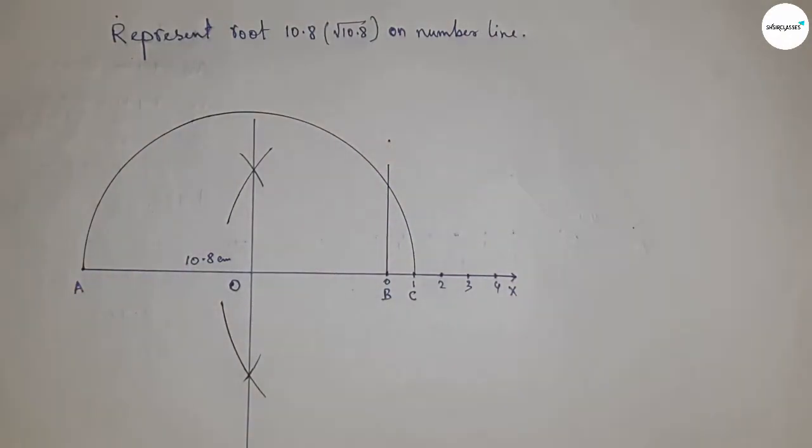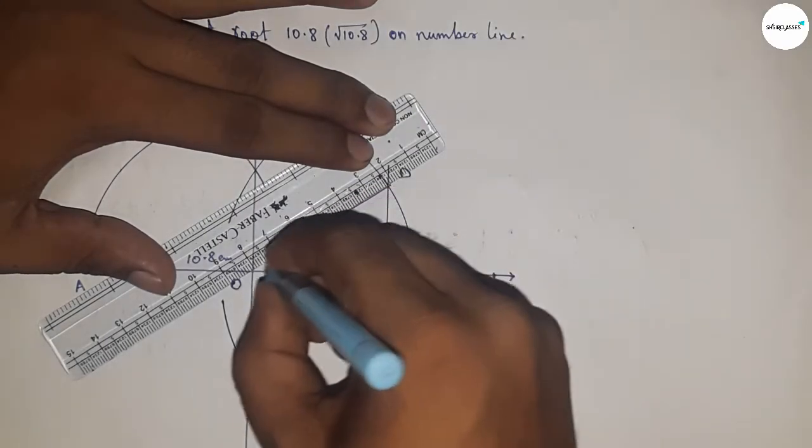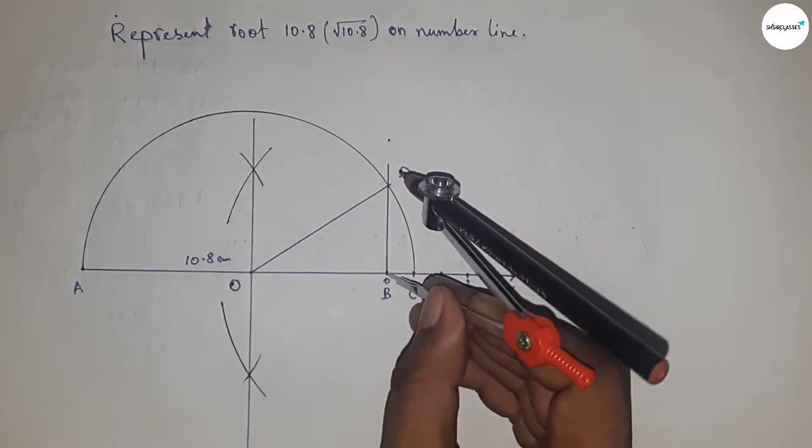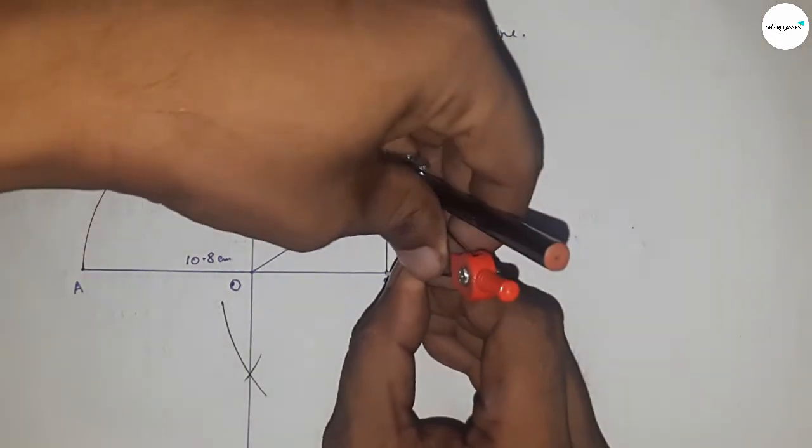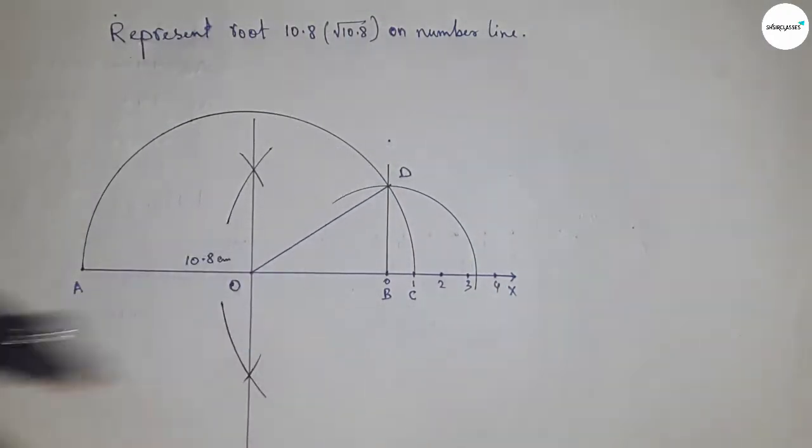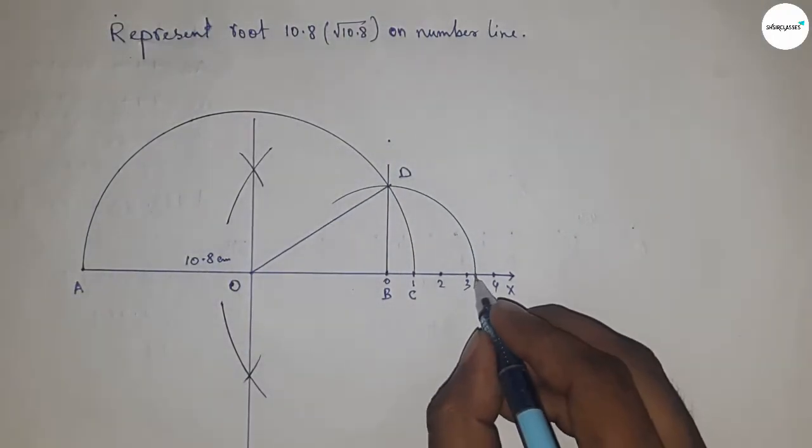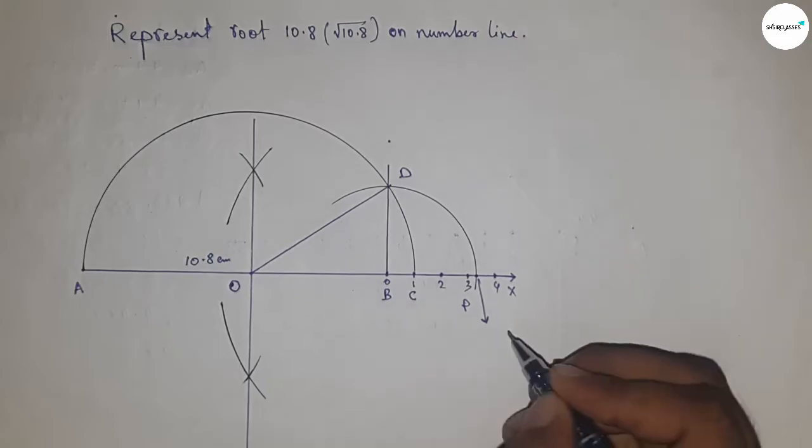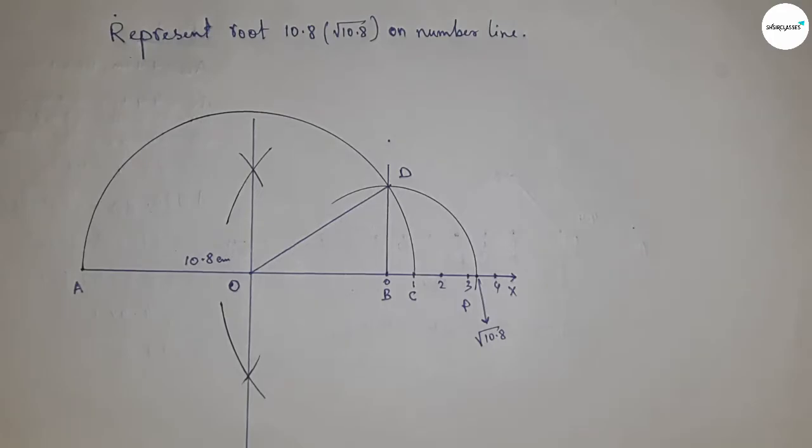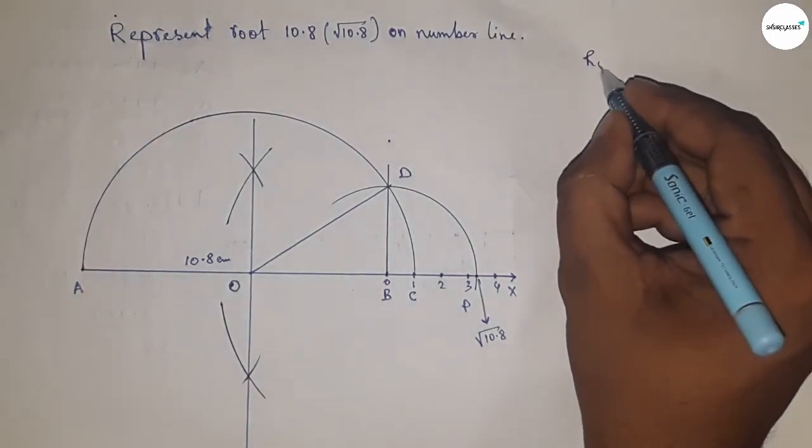Now joining this which meet the semicircle at a point D. Now joining O and D, which is the radius of the semicircle. Now taking the length BD by compass to draw an arc which meet the number line at a point P, and this is the representation of root 10.8 on number line.